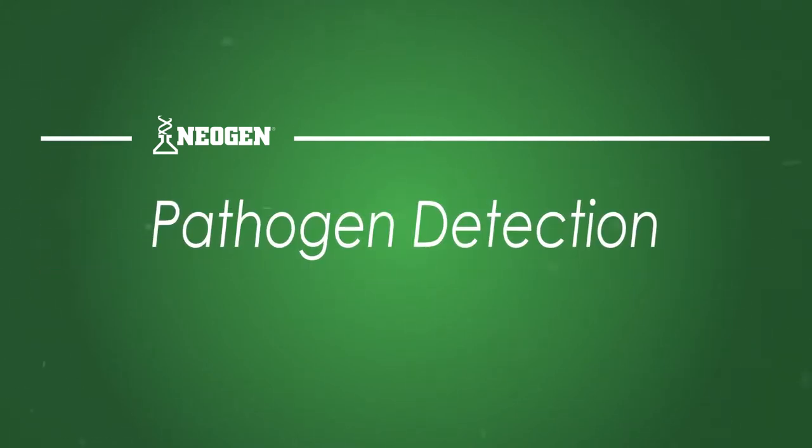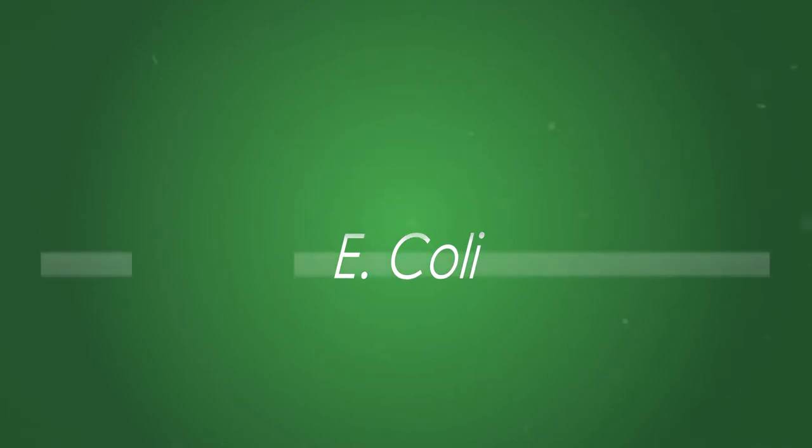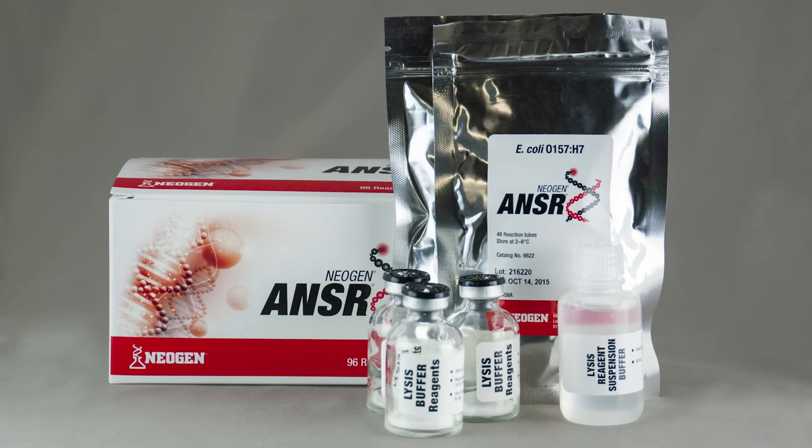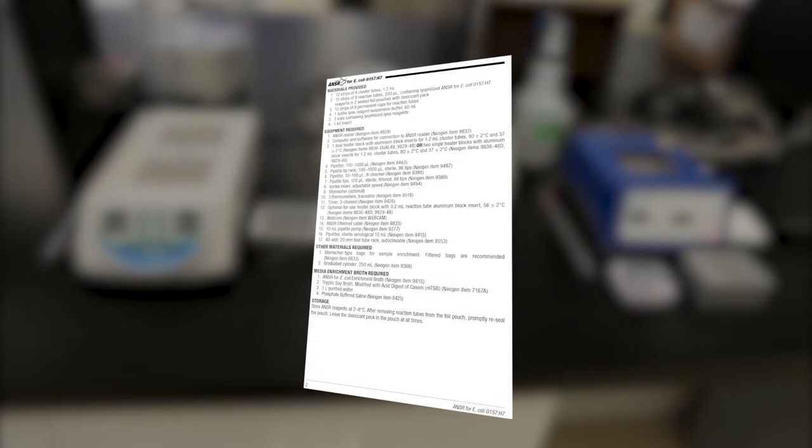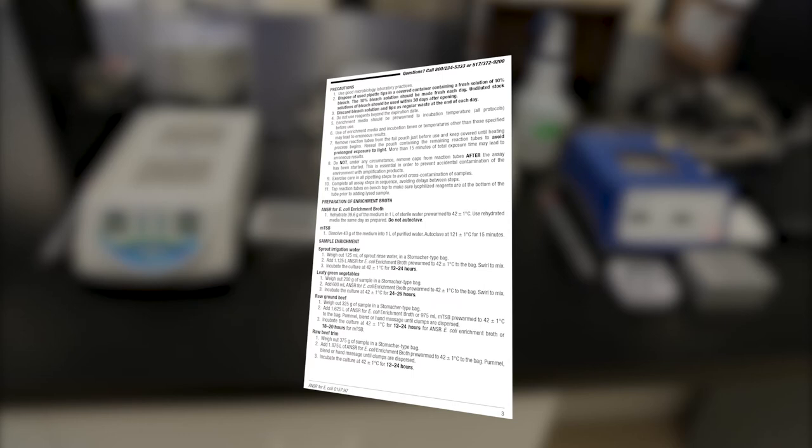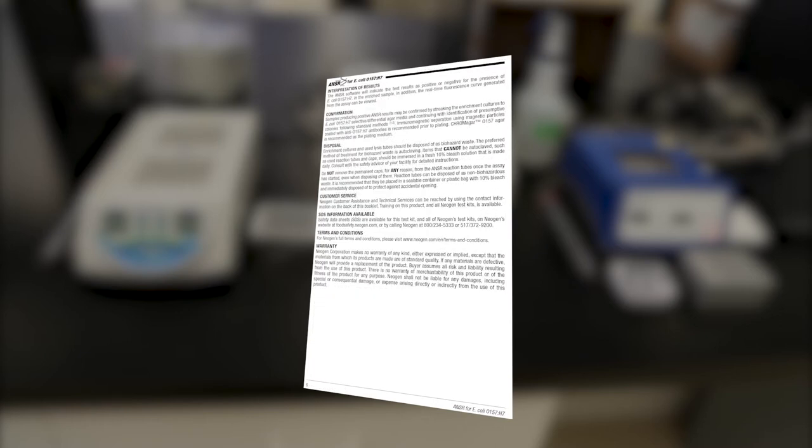In this video, we'll look at everything you need to know to run the AOAC-approved Answer for E. Coli 0157H7 kit. This presentation serves only as a visual guide to the written materials supplied with the test kit. To ensure accuracy in the performance of this test, please read and follow the test's written instructions in their entirety, and consult with your Neogen representative with any questions.